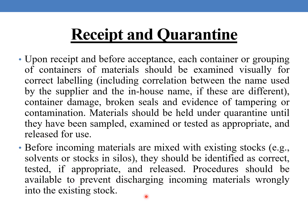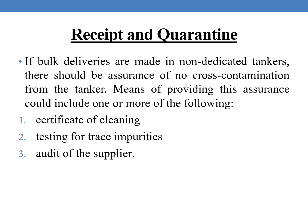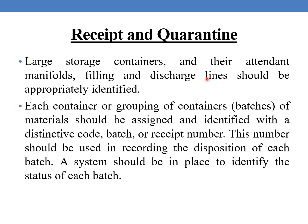Procedures should be available to prevent discharging incoming materials from non-dedicated tankers. If bulk deliveries are made in non-dedicated tankers, there should be assurance of non-cross-contamination from the tanker. Means of providing this assurance could include one or more of the following: certificate of cleaning, testing for trace impurities, or audit of the supplier. Large storage containers and their attendant manifolds, filling and discharge lines should be appropriately identified.